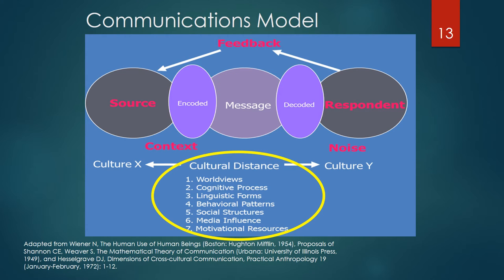There are seven major dimensions that define cultural distance — the distance between source and respondent — including: worldview, ways of believing or deep beliefs; cognition, ways of thinking; linguistic forms, the ways of expressing ideas; behavioral patterns, ways of acting; social interactions, ways of interacting; media influences, the ways of channeling messages; and motivational resources, the ways of deciding. The more one culture differs from another in these seven dimensions, the greater the cultural distance and resultant difficulty in communicating effective messages and meaning between those cultures. Understanding these dimensions is essential for effective public health communications and community engagement.